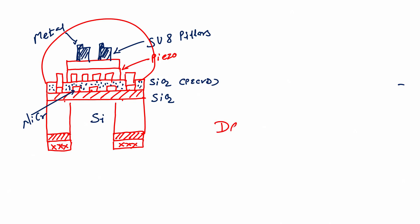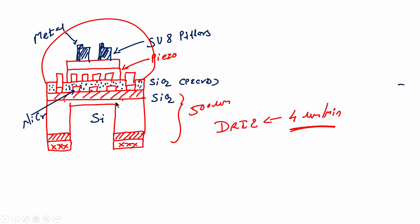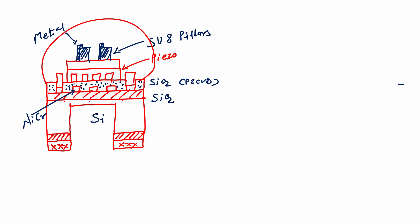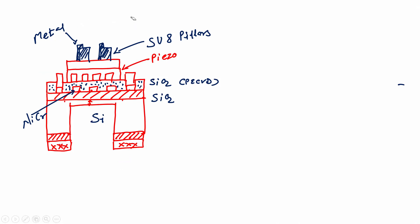Knowing the DRIE etch rate — for example, 4 micrometers per minute — and with a wafer thickness of 500 microns, we can calculate exactly how many minutes are needed to create a diaphragm of the desired thickness, say 100 microns. That means etching 400 microns. Thinner the diaphragm, better the sensitivity.